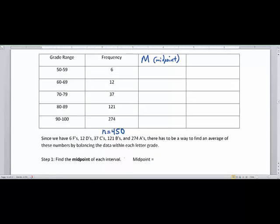Step one is to find the midpoint of each interval. Take your low value of your class width to the very high data point of that class width and divide it by 2. If I do that, if I go 50 plus 59, hit enter, then I divide by 2, I get 54.5. There's my midpoint.